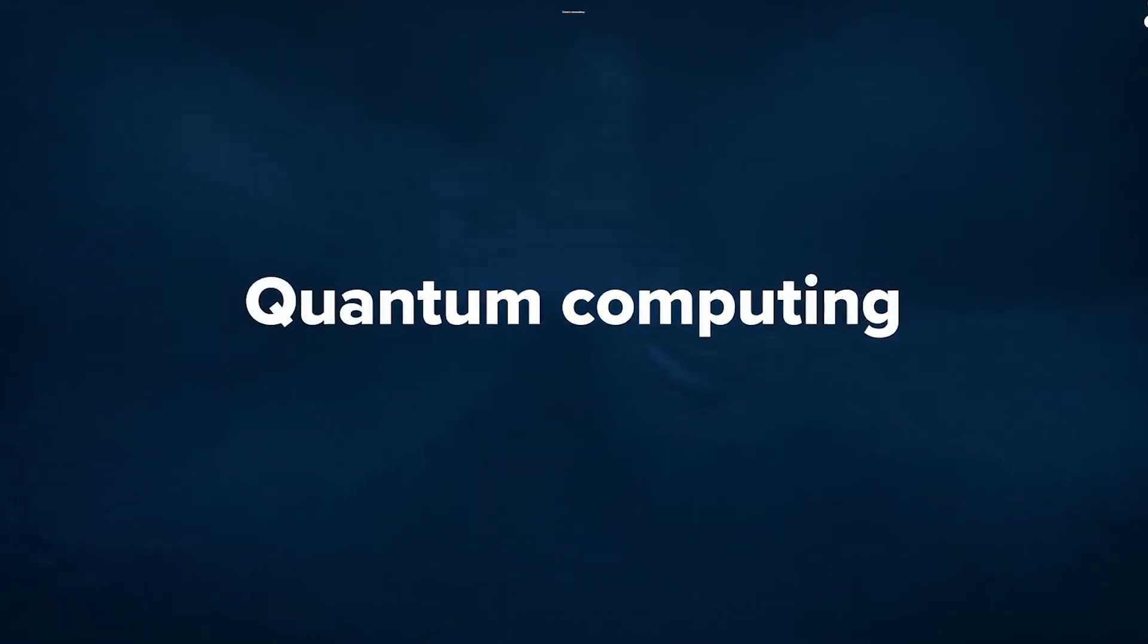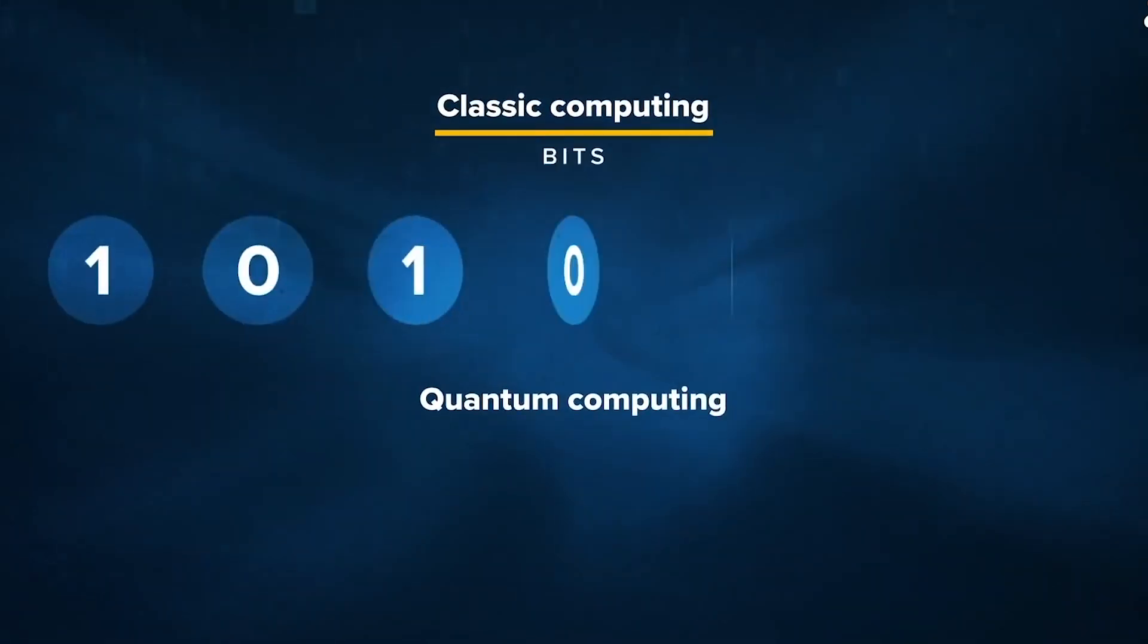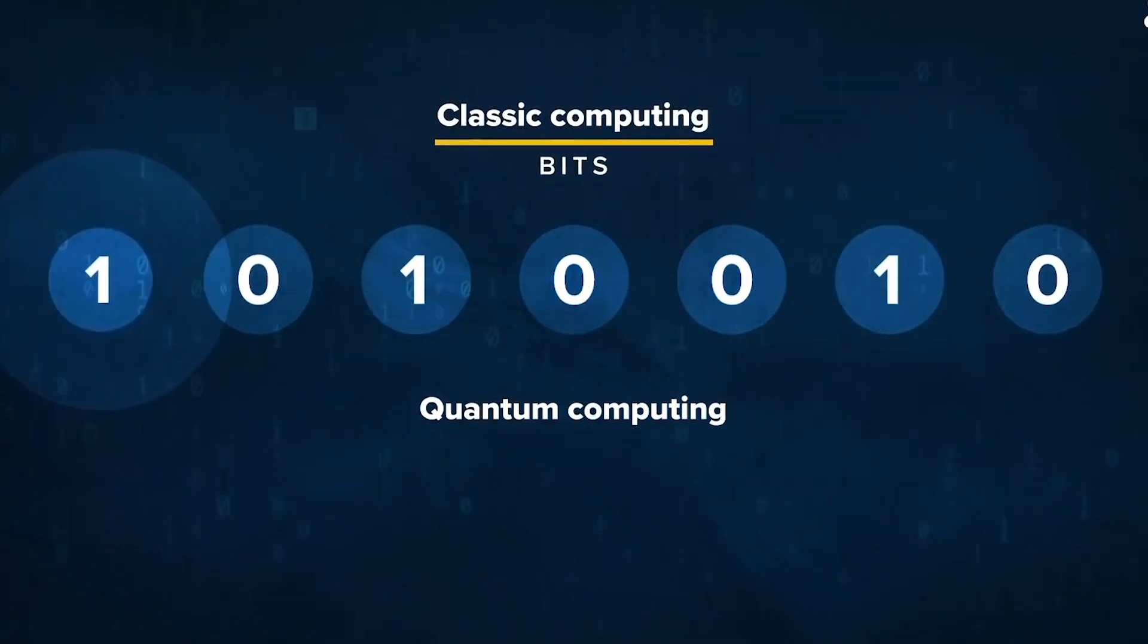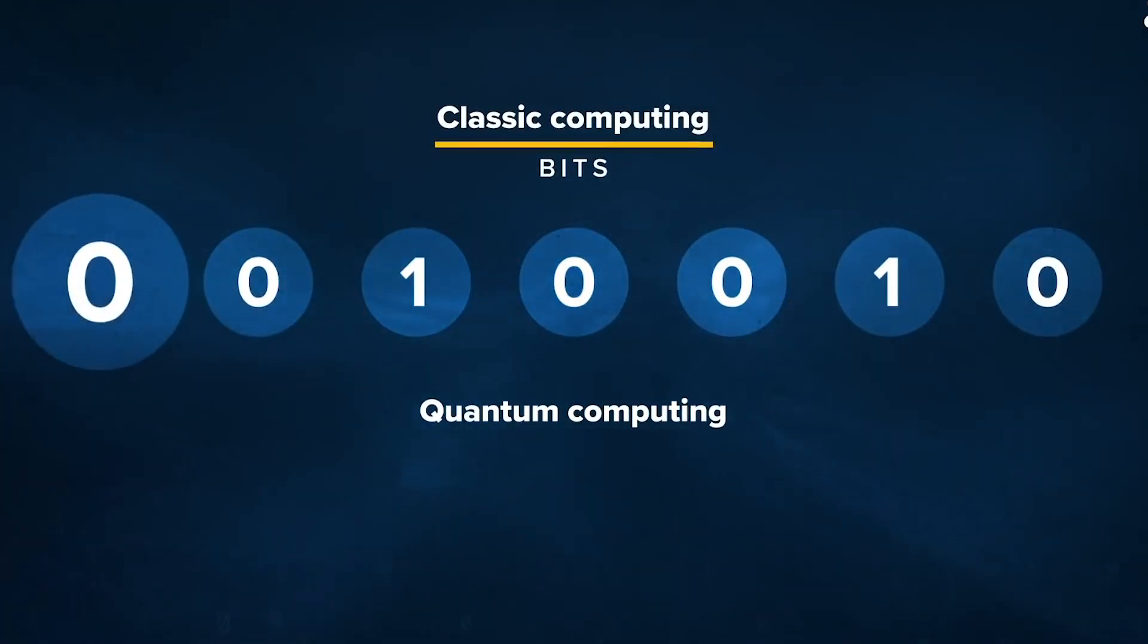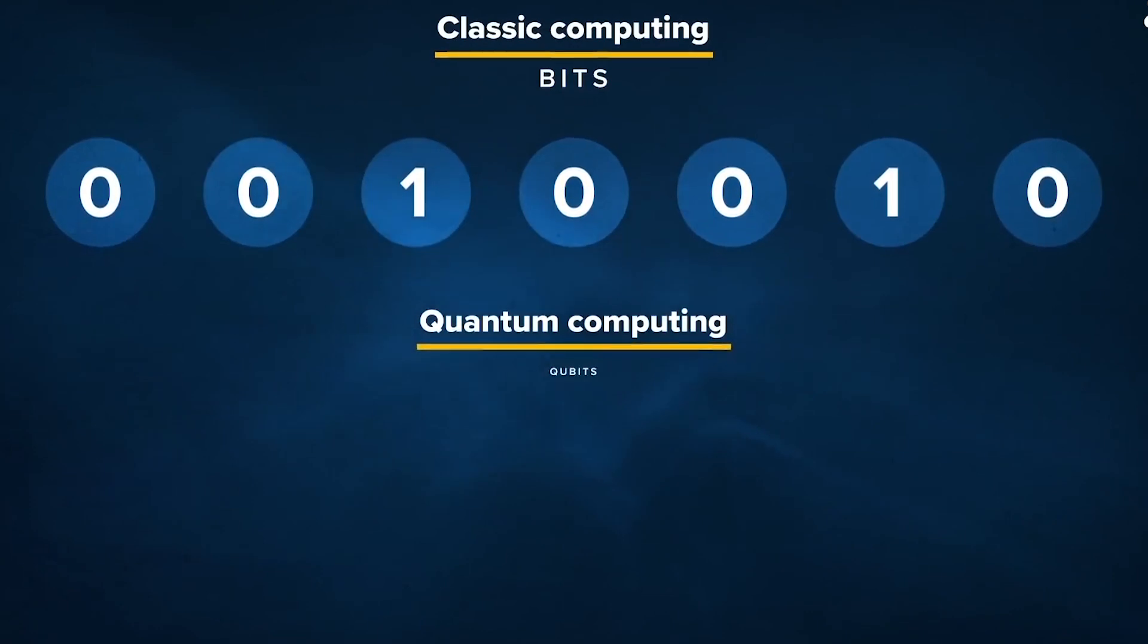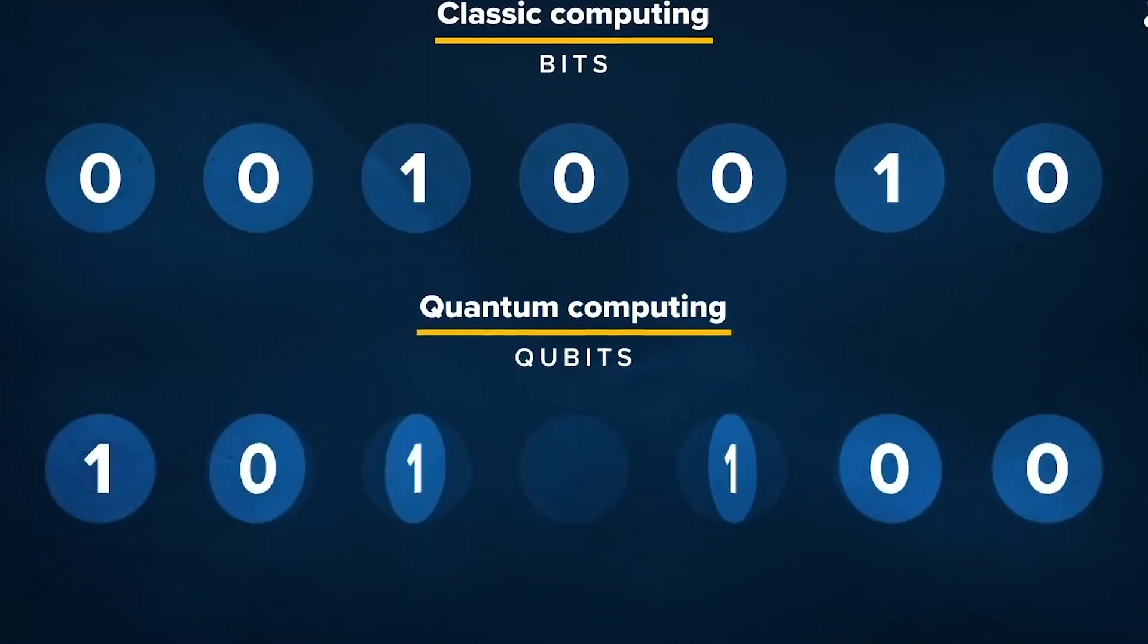Quantum computers perform calculations based on the probability of an object's state before it is measured instead of just ones or zeros, which means they have the potential to process exponentially more data compared to classical computers.